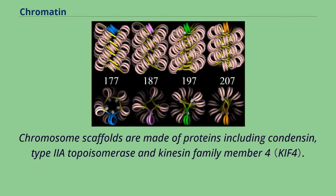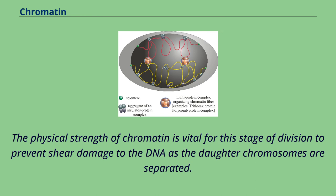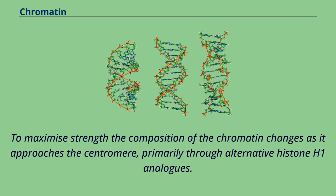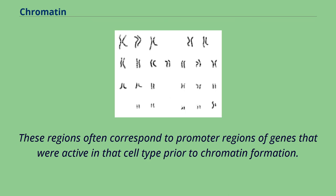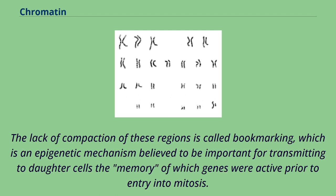Chromosome scaffolds are made of proteins including condensin, type II topoisomerase, and kinesin family member 4. The physical strength of chromatin is vital for this stage of division to prevent shear damage to the DNA as the daughter chromosomes are separated. To maximize strength the composition of the chromatin changes as it approaches the centromere, primarily through alternative histone H1 analogs. During mitosis, although most of the chromatin is tightly compacted, there are small regions that are not as tightly compacted, often corresponding to promoter regions of genes that were active prior to chromatin formation. The lack of compaction of these regions is called bookmarking.